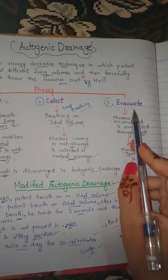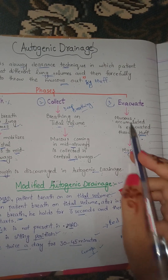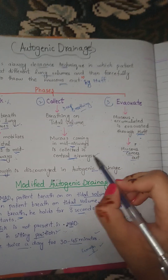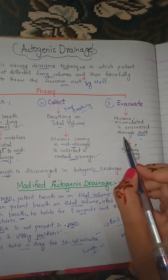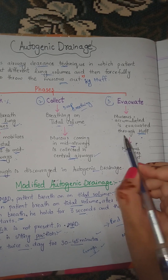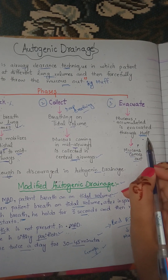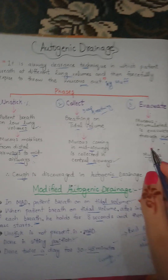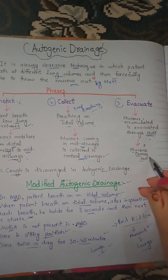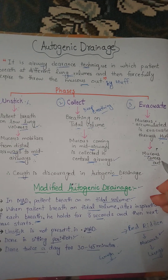The last phase of autogenic drainage is the evacuate phase. In this phase, mucus that has accumulated in the central airways is thrown out by the huff technique, and finally the mucus comes out.